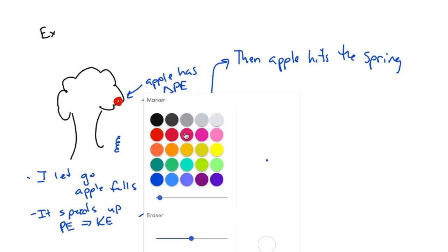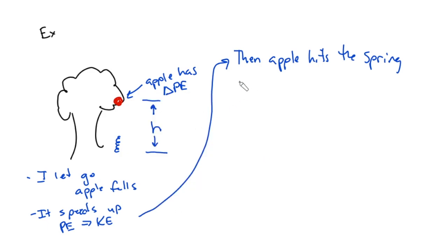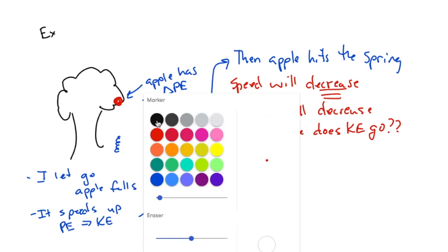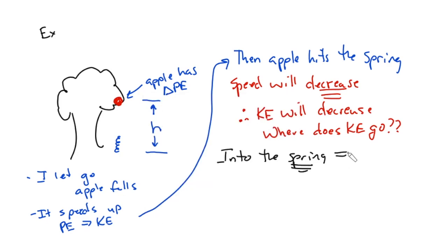And when it does so, when it hits the spring, the speed of the apple will change. It will decrease. Therefore, KE will decrease. But where does it go? Well, the answer is it goes into the spring in the form of PEs. And in a frictionless world where everything is wonderful, the delta PE at the top to start will be equal to the delta PEs when it stops.